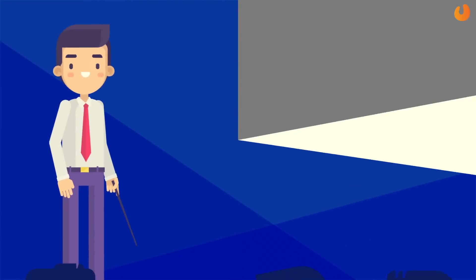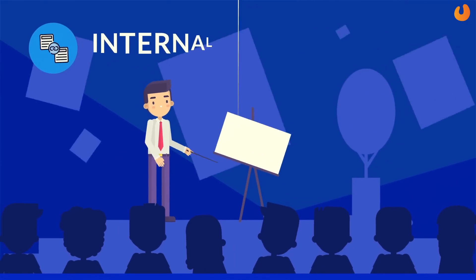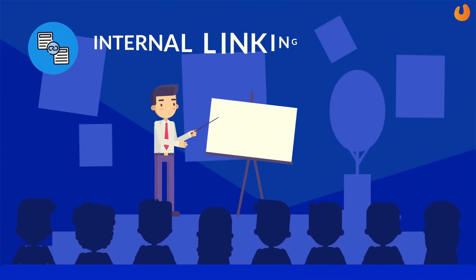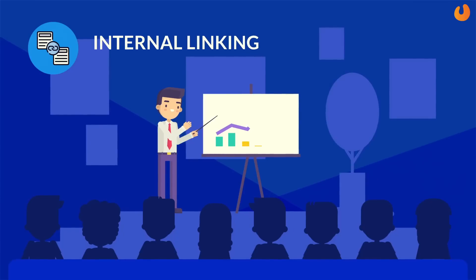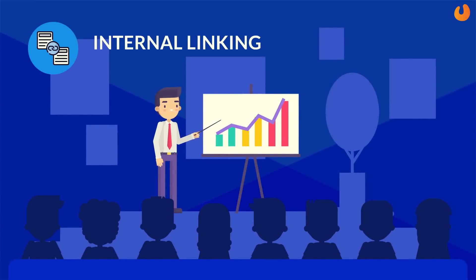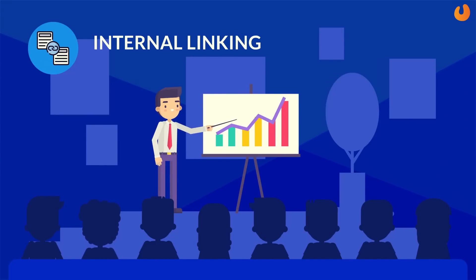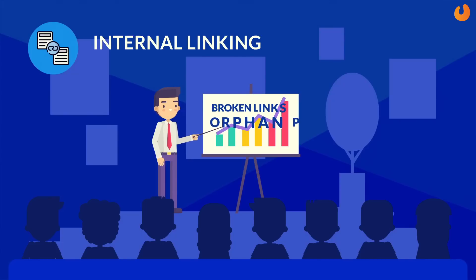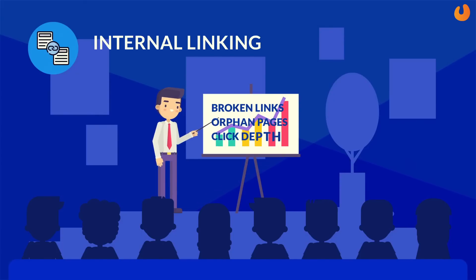Internal linking. Apart from keywords, internal linking plays a major role in boosting the ranking of your website. A content piece of 600 to 800 words must contain at least two to three internal links. Key things to check about internal linking include broken links, click depth, and page orphan issues.